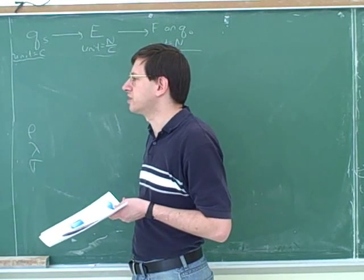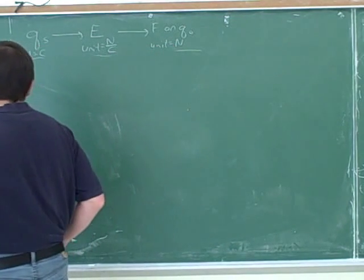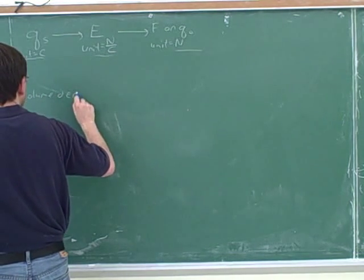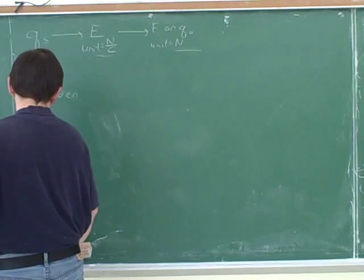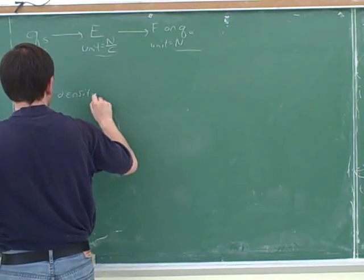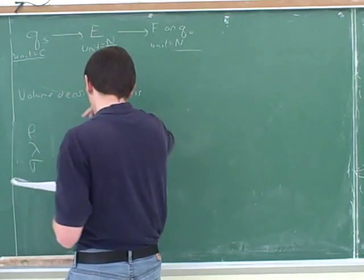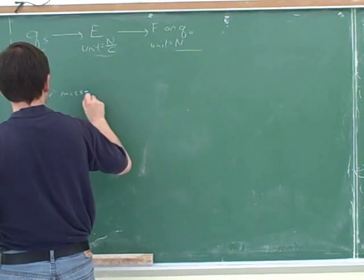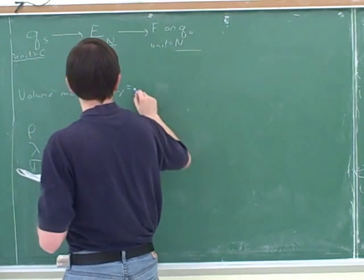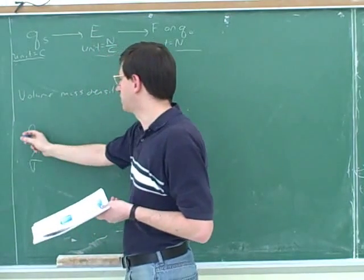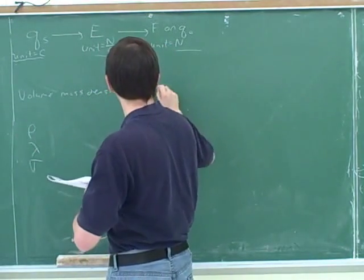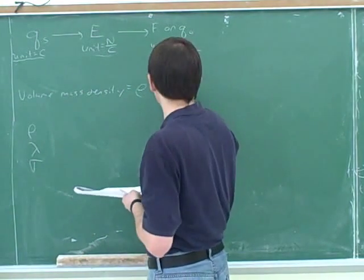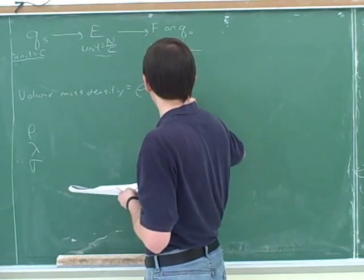When you learned about one type of density last term, you learned about the volume density of mass, or maybe we just call that the volume mass density. Volume densities are symbolized with this symbol, rho. And remember that this tells you how crowded the mass is in a certain volume. So that would be based on how much mass there is in a given volume.